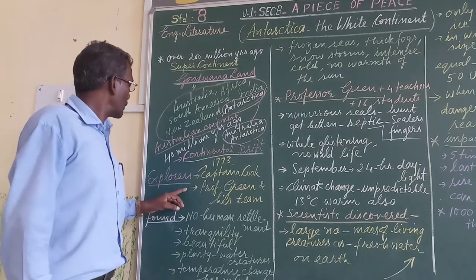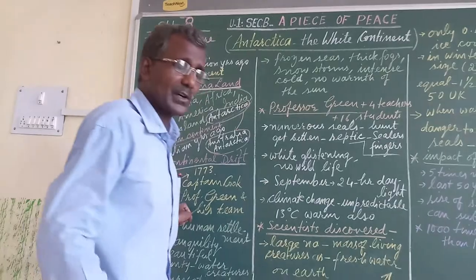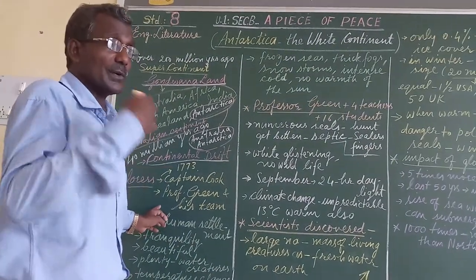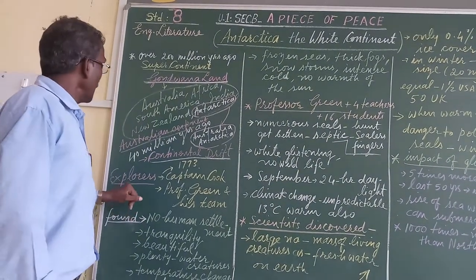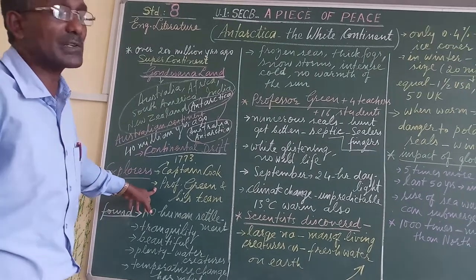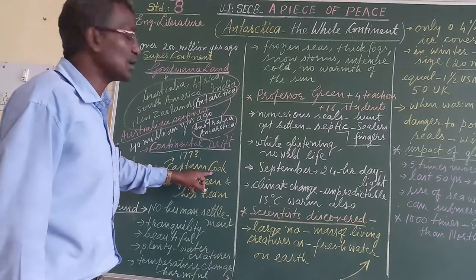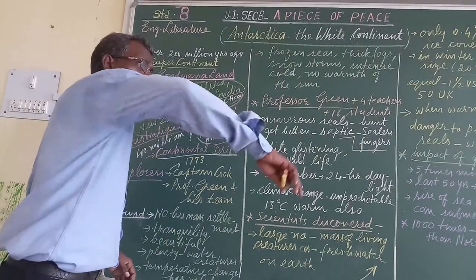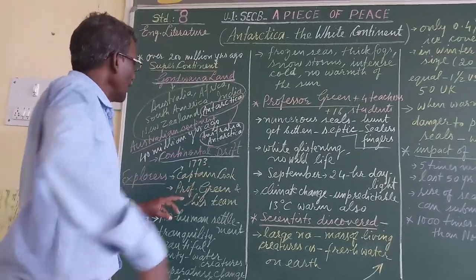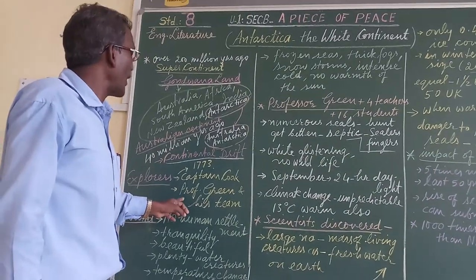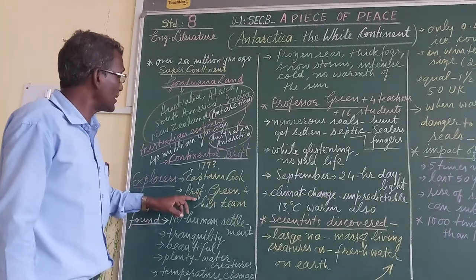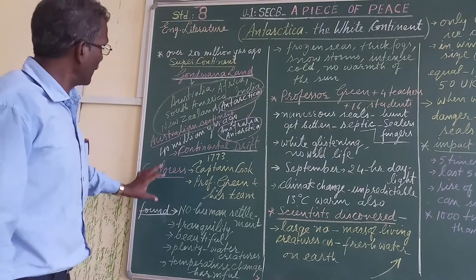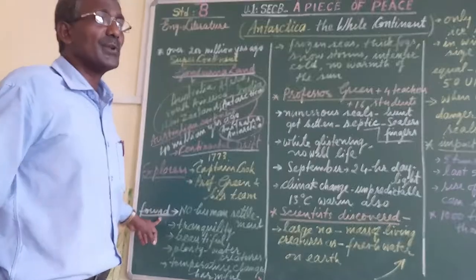We come to know through explorers what is going on in Antarctica — what is present there, what phenomena happen there, what creatures live there. In the process of explorers going to Antarctica, firstly we have Captain Cook, who landed there in 1773. He made a circumnavigation of Antarctica, sailed around it, and found out so many strange phenomena. He was followed by another explorer, Professor Green, accompanied by his team.